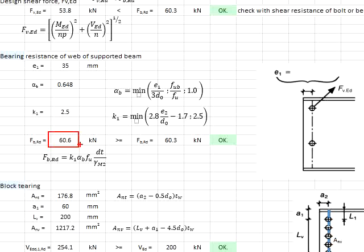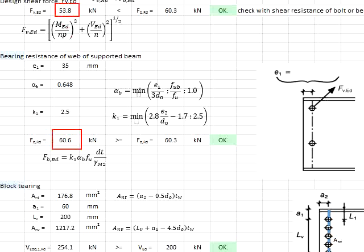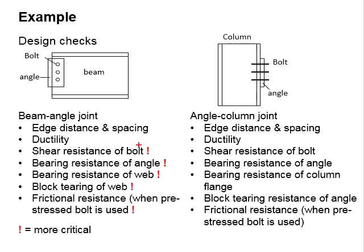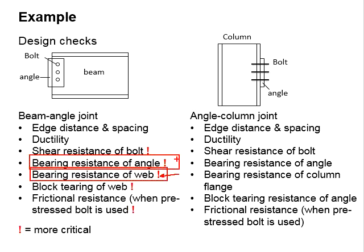This resistance is to be checked against the design shear force, which is equal to 53.8 kN. Since the resistance of 60.6 kN is greater than the shear force of 53.8 kN, the bearing resistance of the web is acceptable. As the bearing resistance of the web is the more critical case and it passes, we also expect the bearing resistance of the angle to pass as well.